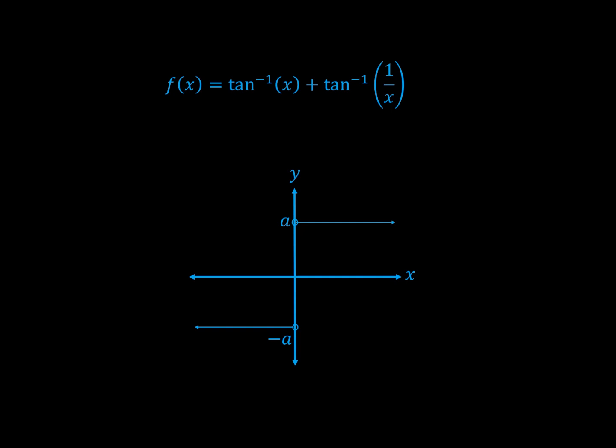Now it's just a matter of trying one point. Let's say x equals 1. We see that f of 1 is simply pi on 2. This means a has to be pi on 2. And so we have our function. It's not a curve or a line, but some piecewise function with two lines.